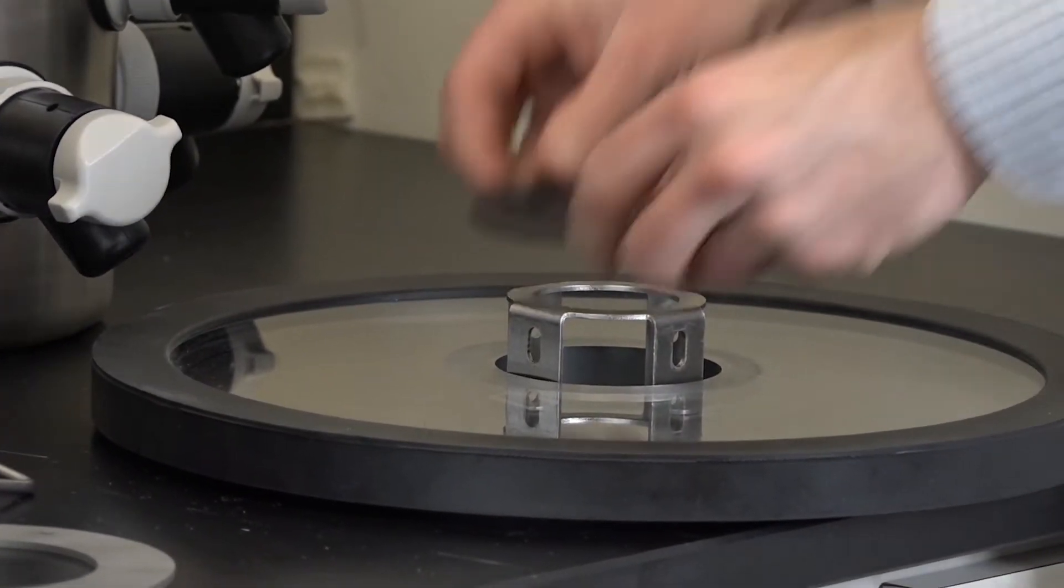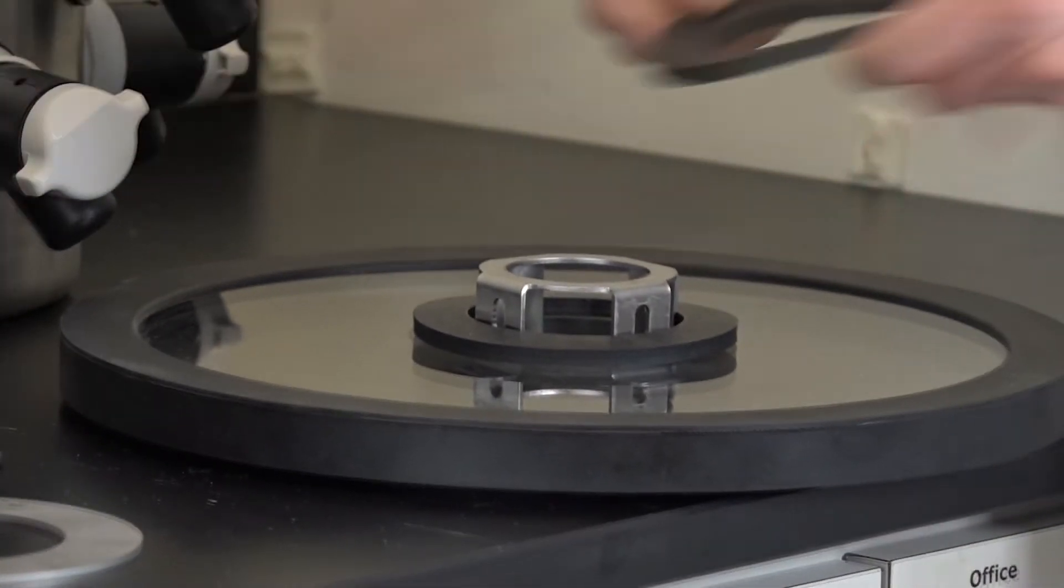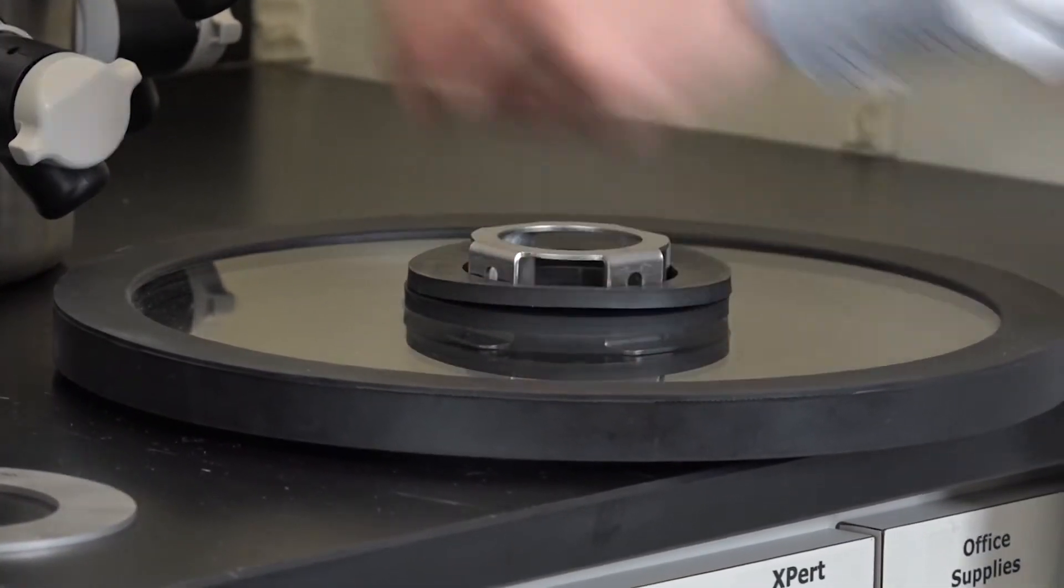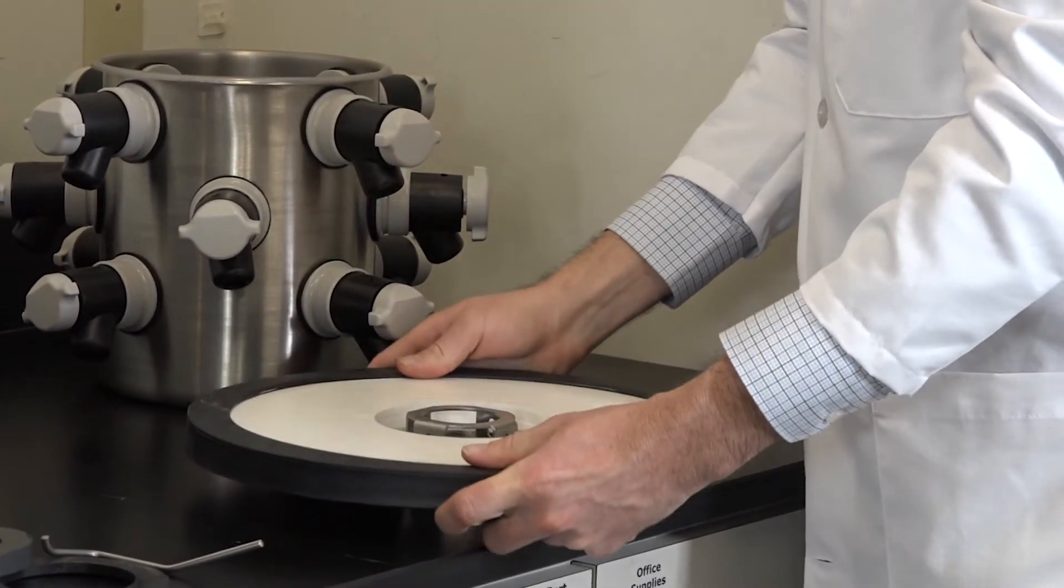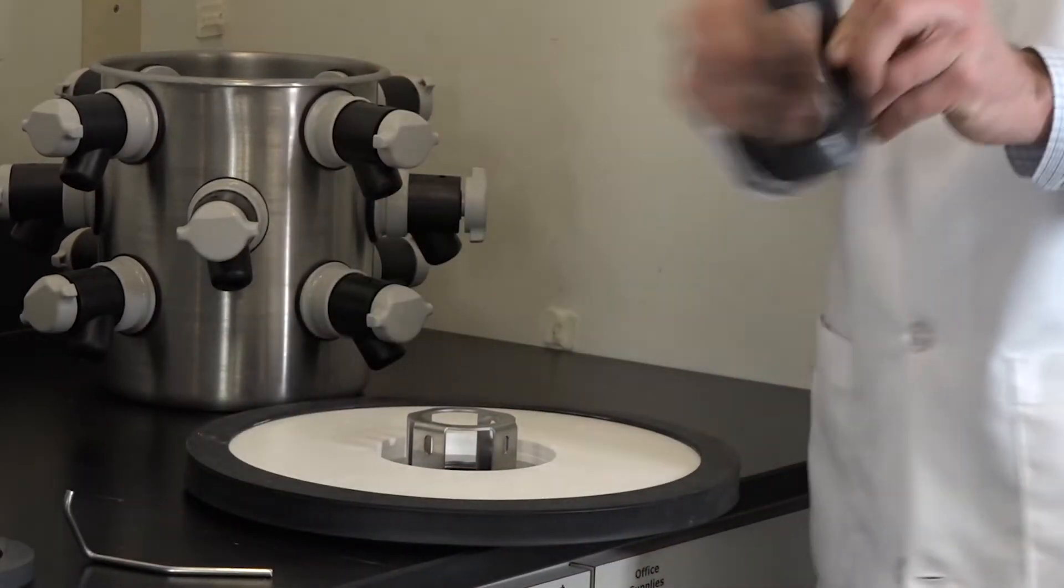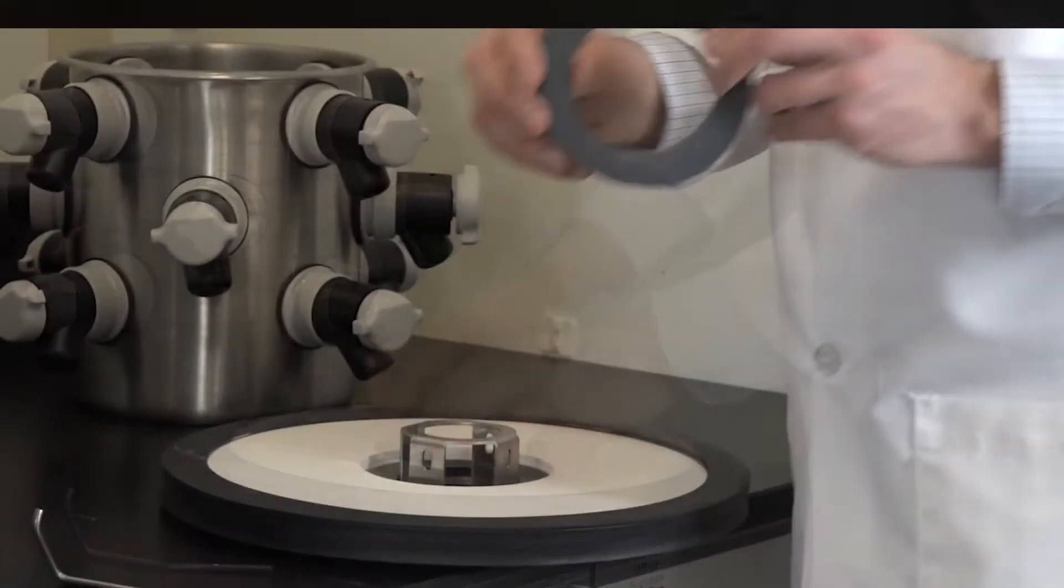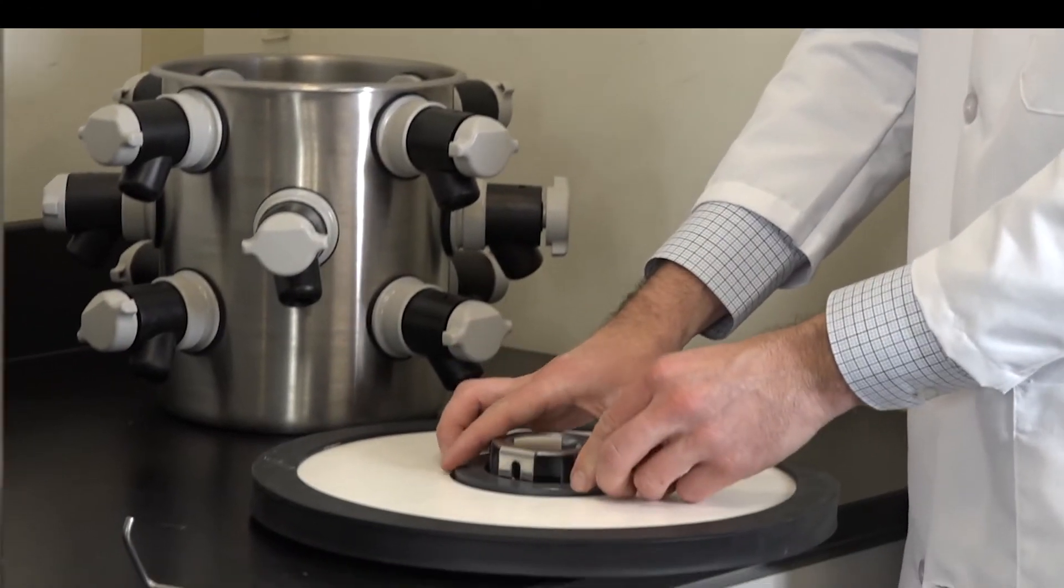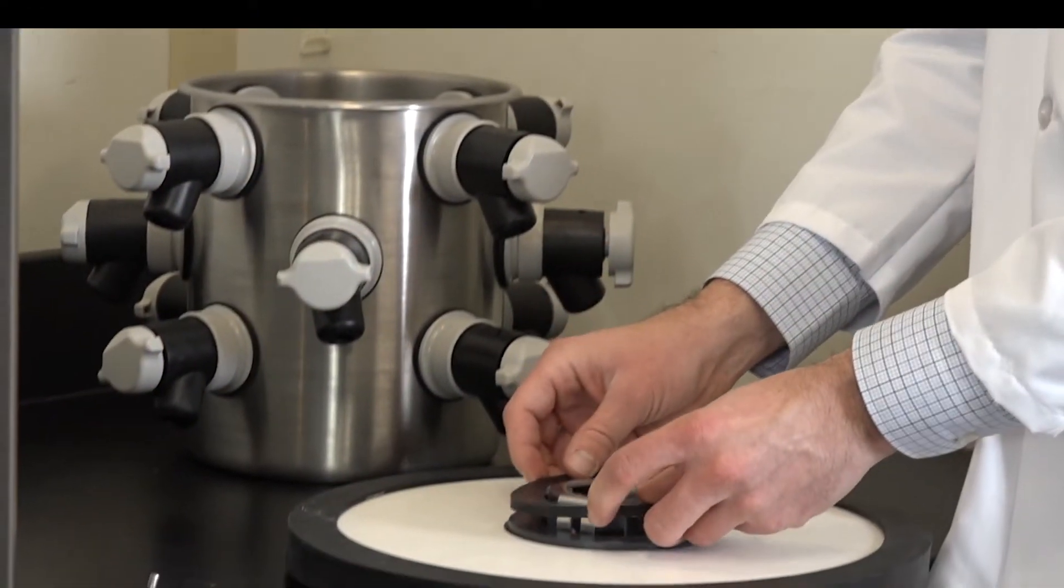If the collector lid is acrylic, place two gaskets over the collar. If the collector lid is stainless steel, place a gasket, acrylic spacer, and another gasket over the collar.